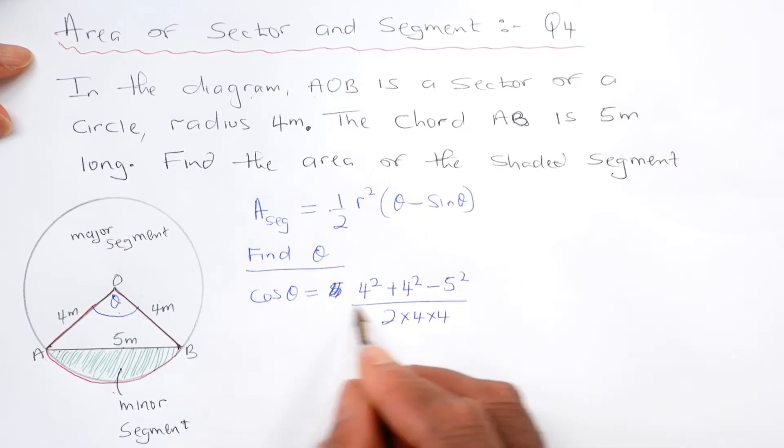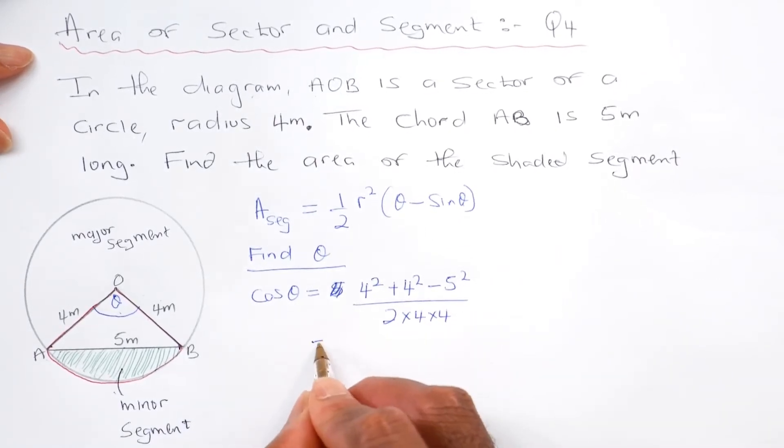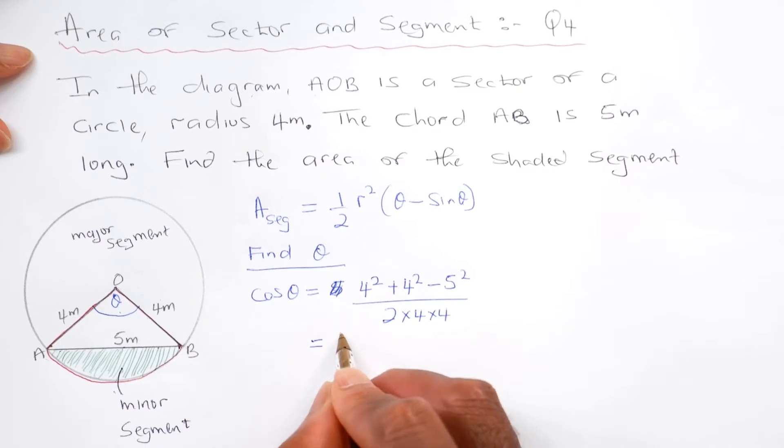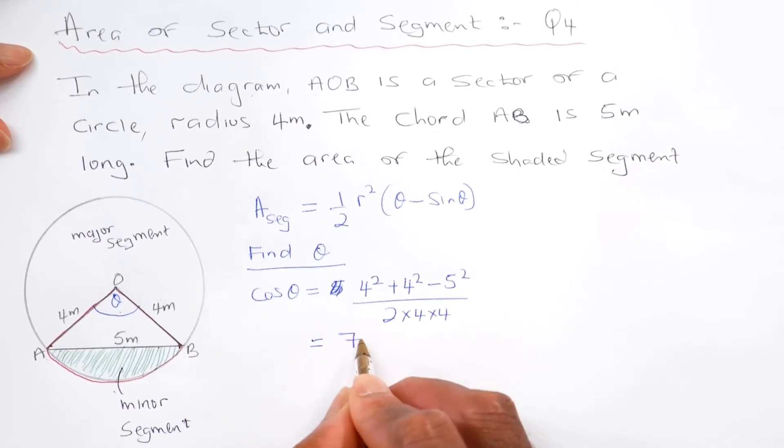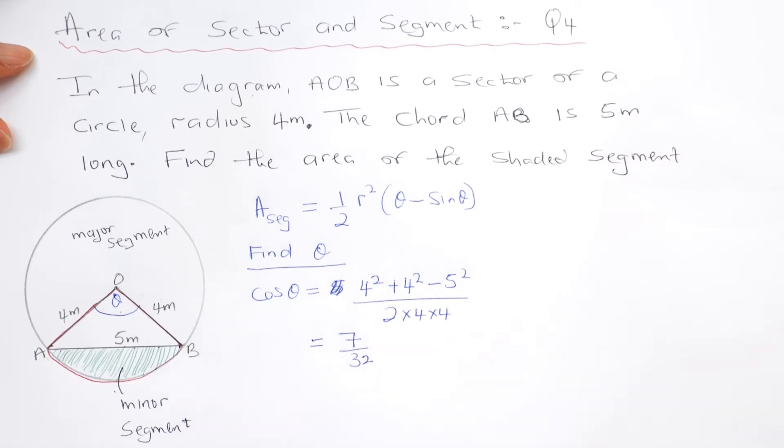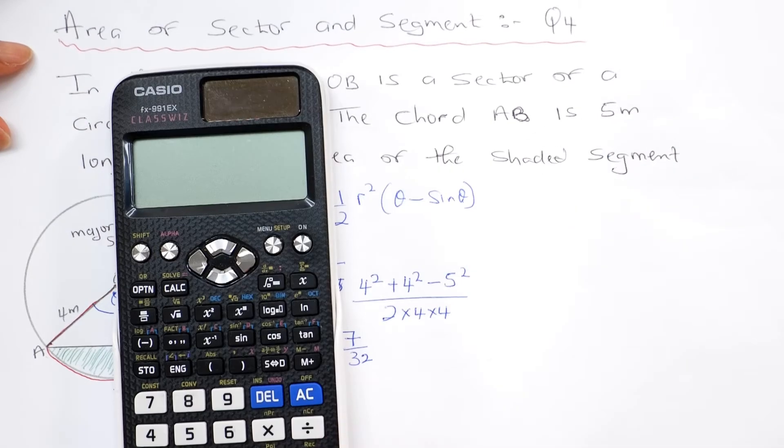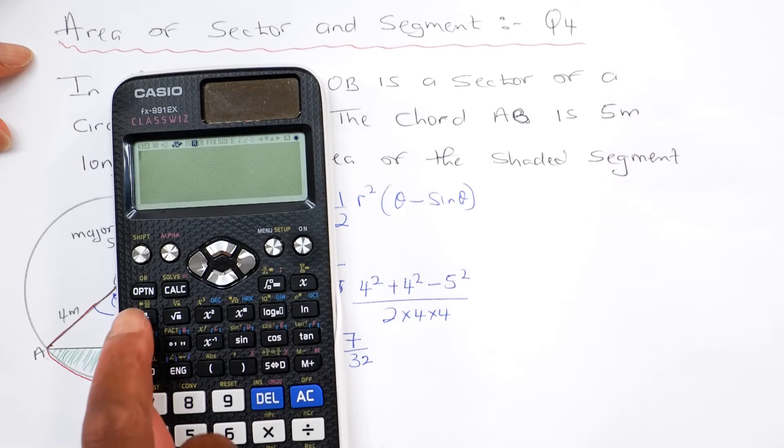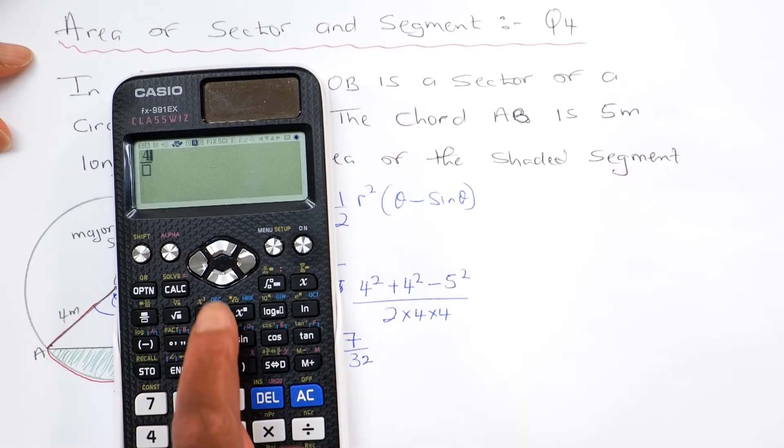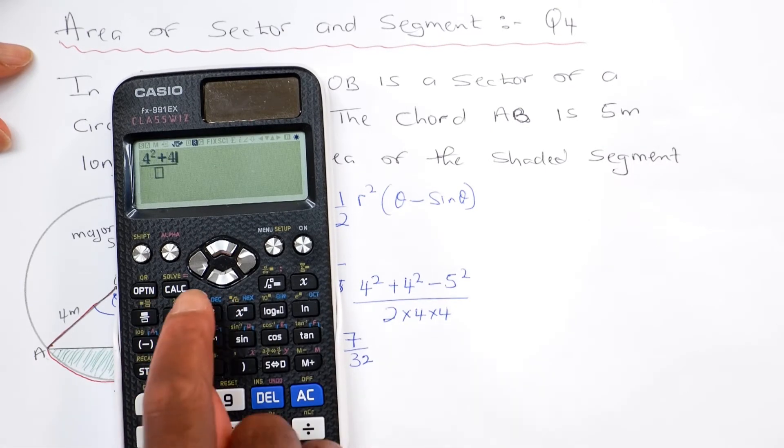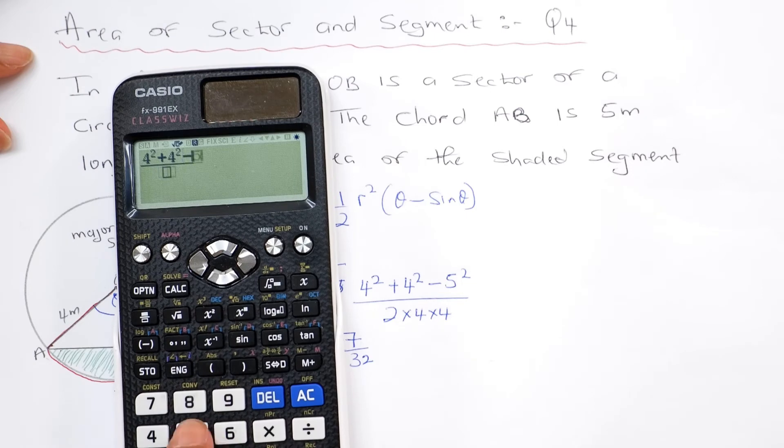So this is using cosine rule. When I use my calculator to work it out, that should give 7 over 32. So that's the calculator there. Turn it on, fraction key, 4 squared plus 4 squared minus 5 squared.